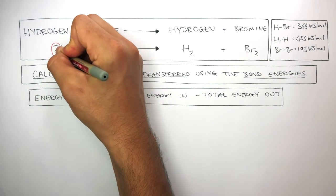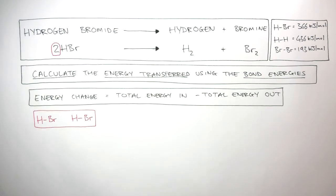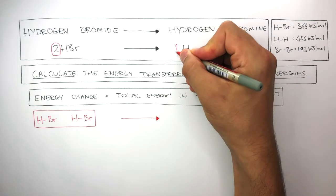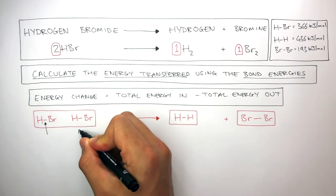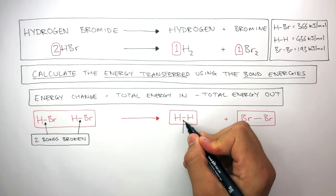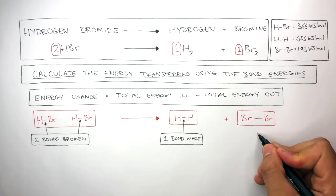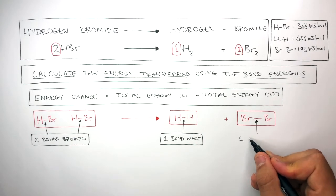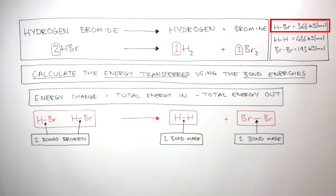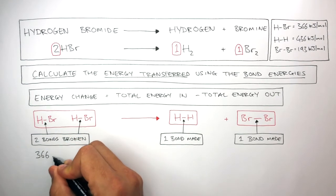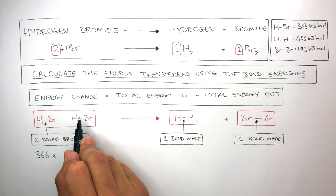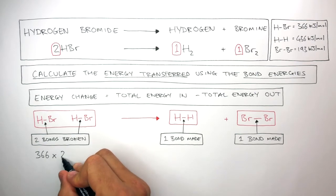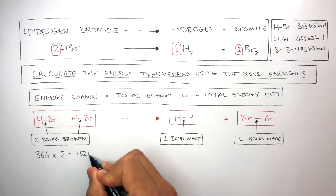The equation tells us there are two molecules of hydrogen bromide, so we draw them here. There is one molecule of hydrogen formed and one molecule of bromine formed. The diagram shows us there are two HBr bonds broken, then one H-H bond made and one Br-Br bond made. The HBr bond energy is 366 kilojoules per mole, so we write 366 times 2, which equals 732 kilojoules per mole.